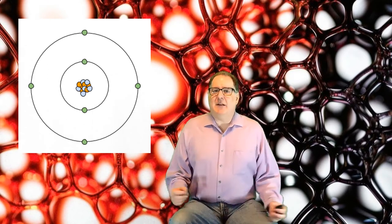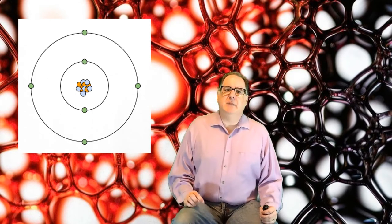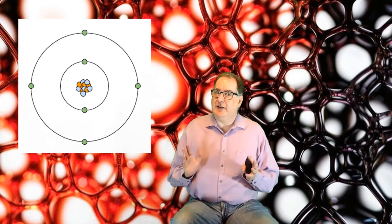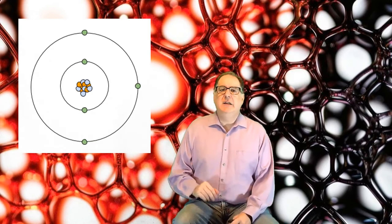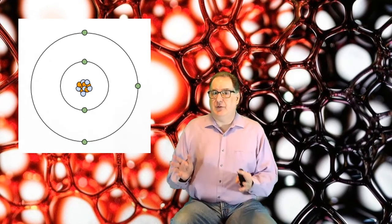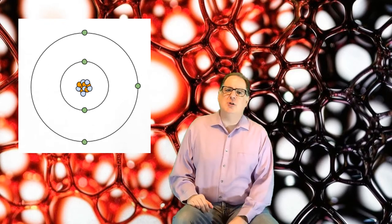So all carbon atoms have six protons. If it has six electrons, then it's an atom. If it has a different number of electrons, then it's an ion. It's still carbon. It's just a carbon ion, and it has a charge.